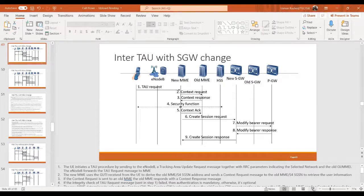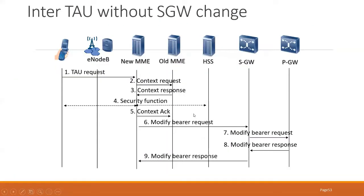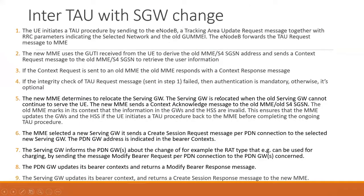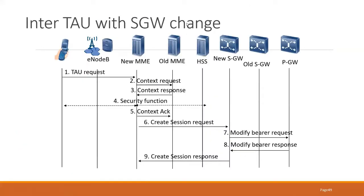I will repeat that part. Without HGB: change location, update request, cancel location with the old MME, the update location acknowledgement. This consists of your subscription data information, tracking area update accept where your GUTI will be assigned, and the tracking area update complete. Coming back to your SGW change.